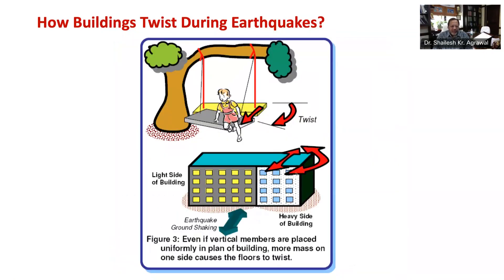Going back to the example of a rope swing on the tree: if you sit on one end of the cradle, it twists — it moves more on the side you are sitting. This also happens when more of your friends bunch together and sit on one side of the swing. Similarly, if the mass of the floor of the building is more on one side — for example, one side may have a storage room or library — then that side of the building moves more during ground movement. The heavier side of the building displaces horizontally as well as rotates, meaning the building twists on the heavier side.